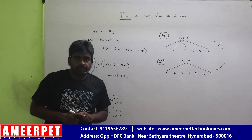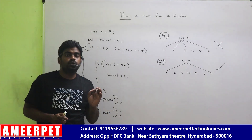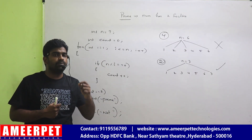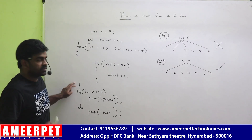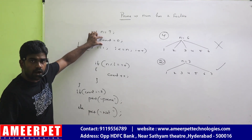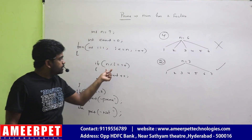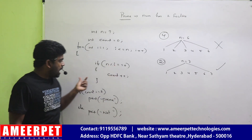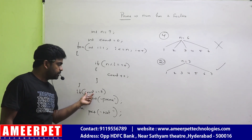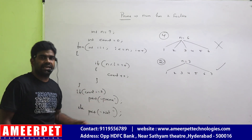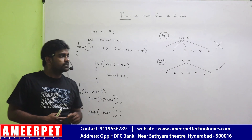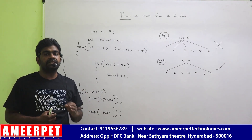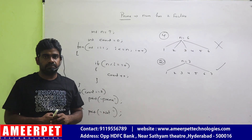So what is prime? The number which is having two factors. First we need to count how many factors are present using the loop, declare one variable count initialized to zero. Whenever you find a factor, increase the count by one. After the loop, if count equals two it's prime, else it is not prime. This is the simple way of writing code to understand whether it is a prime number or not. Thank you all.